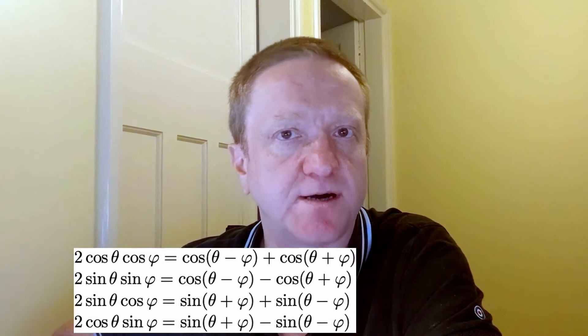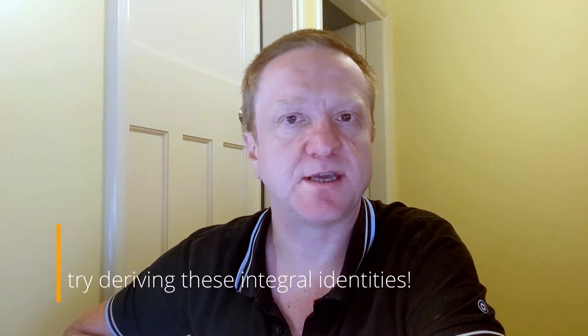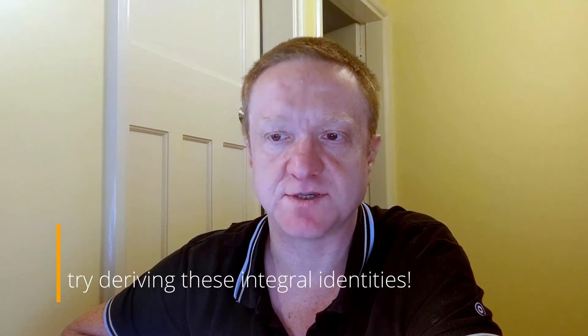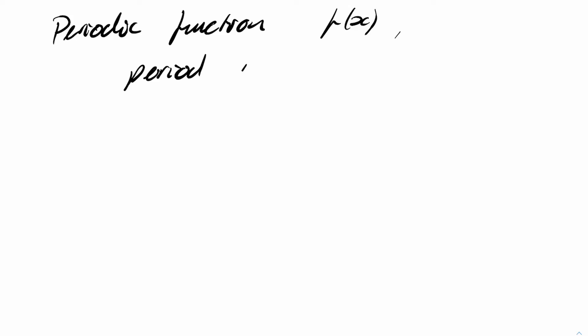These are relatively easy to show. You just need to use the rule that cos a times sine b equals cos a plus b, etc. Plug those in, evaluate the integrals, and you'll see that these results come out. This means if a function has a period of two pi, I can use these results in order to expand them as a sum over sines and cosines. Let's see how that works.